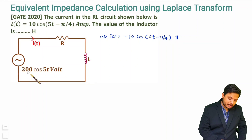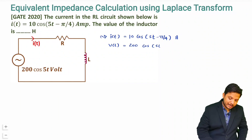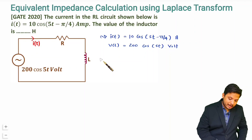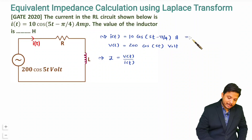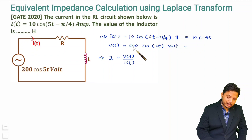The voltage source is given as V(t) = 200 cos(φt) in volts. Now we can identify the value of Z as V(t) divided by I(t). Since both have the same frequency, I can write I(t) as 10 at angle −π/4, which is −45°, and V as 200 at angle 0°.